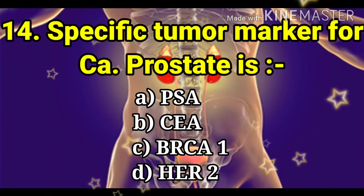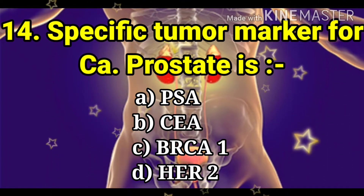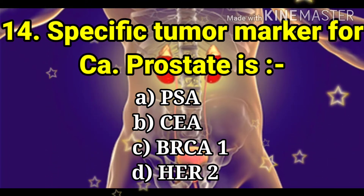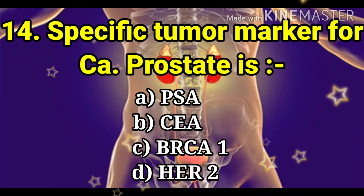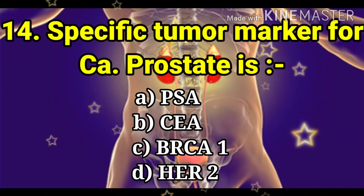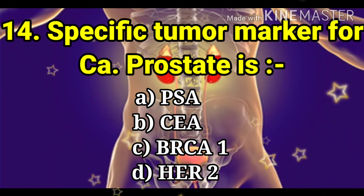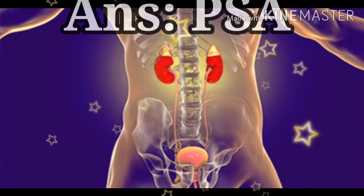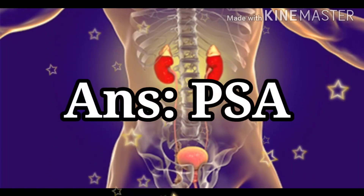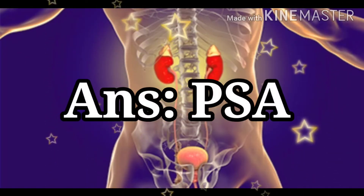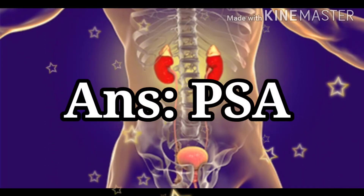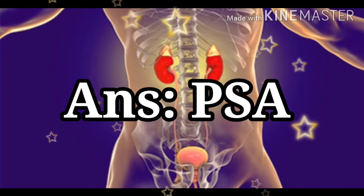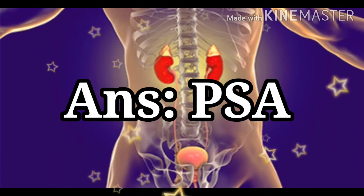Next question: the specific tumor marker for carcinoma of the prostate. The options are PSA, CEA, BRCA1, and HCR2. The answer is PSA, which stands for Prostate Specific Antigen — it is the tumor marker for prostate cancer.